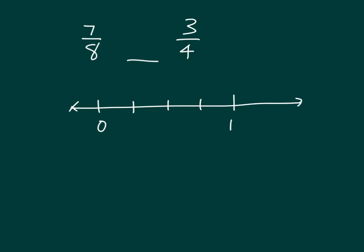We can mark three-fourths on there. Now, how would I get this number line to eighths using that same number line? I could draw one more tick mark in between each fourth, separating it into eighths. So we have one-eighth, two-eighths, three-eighths, four-eighths, five-eighths, six-eighths, and seven-eighths. Let's mark seven-eighths on the line. And using our number line, we know that seven-eighths is bigger than three-fourths.